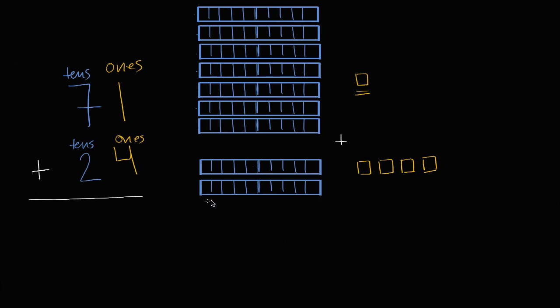Let's first think about the ones. We have one one and then four more ones. Well, that's going to be five ones. So we can count them right over there. That is five ones right over there. One one plus four ones is five ones.